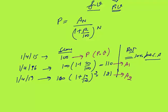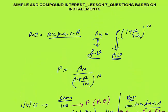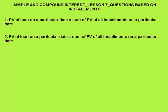The principal can be considered as the present value of 100, and the amount after 1 or 2 years is the future value — amount and future value are the same, principal and present value are the same. This same concept applies to simple interest. The core concept: present value of a loan on a particular date equals the sum of present values of all installments, or equivalently, future value of a loan equals the sum of future values of all installments.